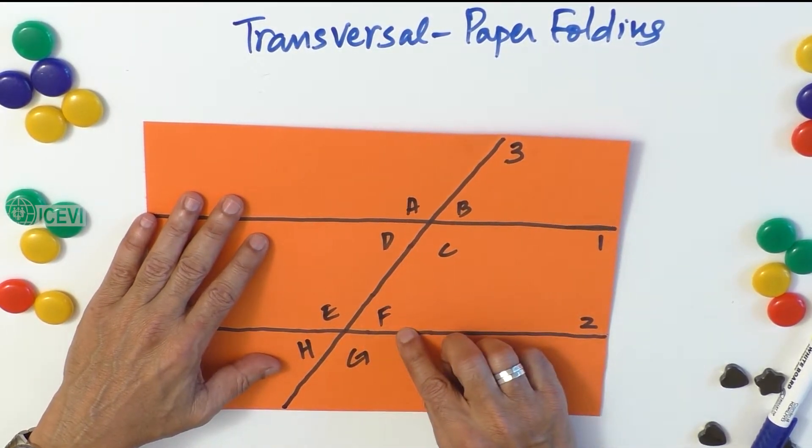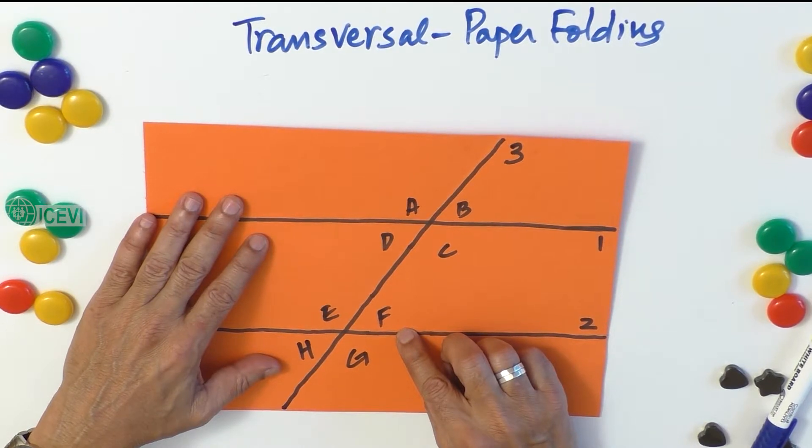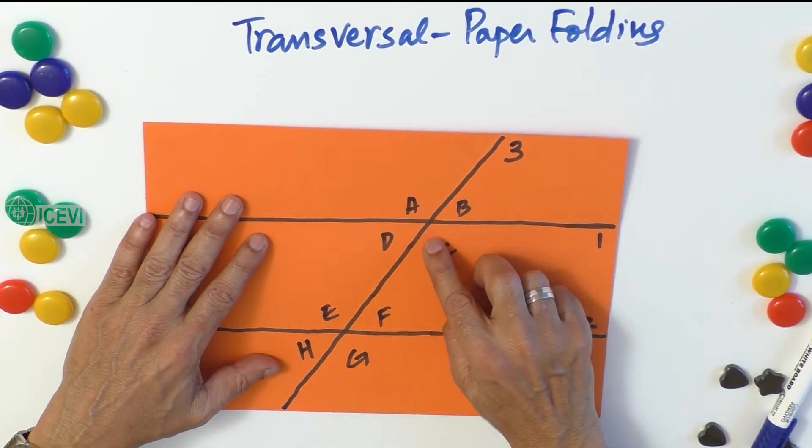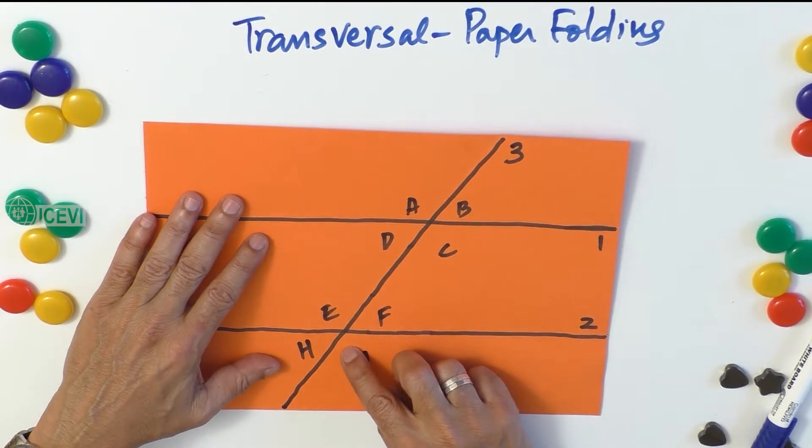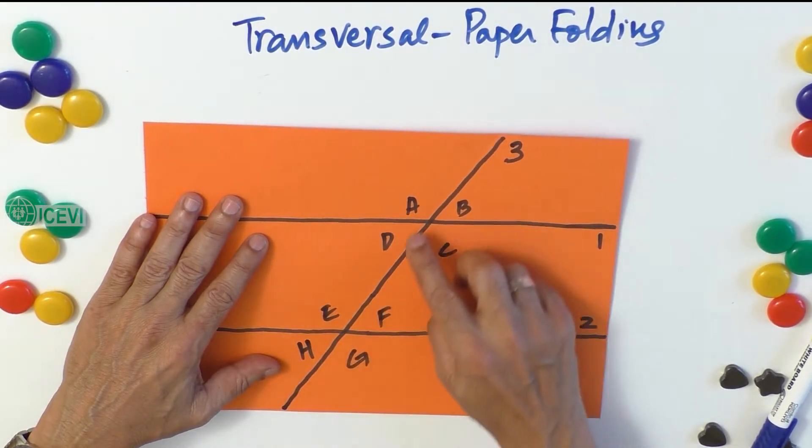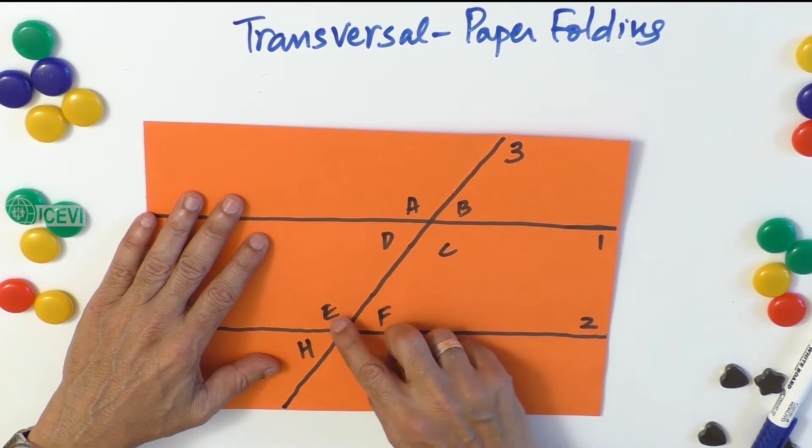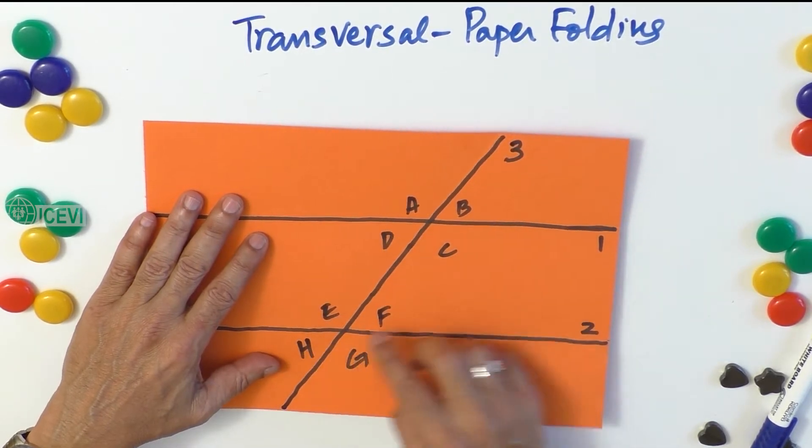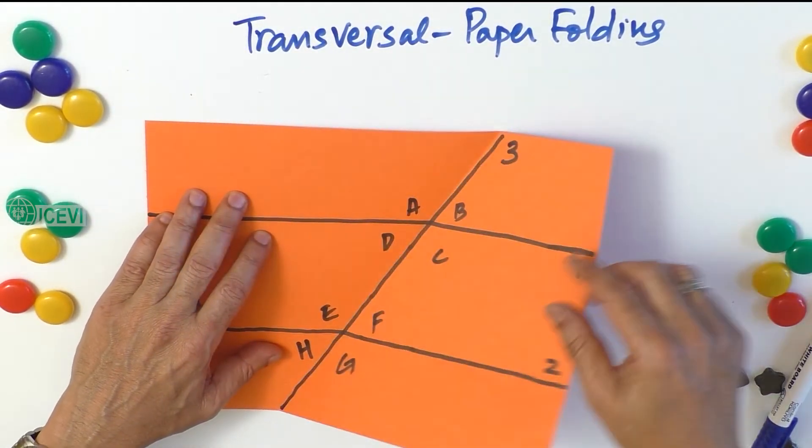Angle C and angle G, which are corresponding angles, are equal. Similarly, angle A and E are equal, D and H are equal. So using this paper folding, you can develop all types of the angles formed by the transversal.